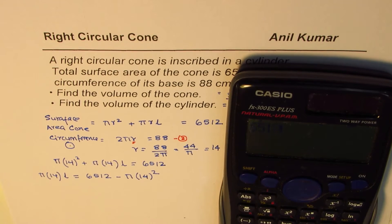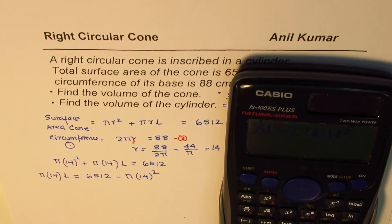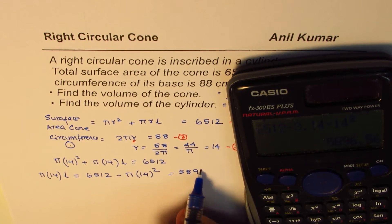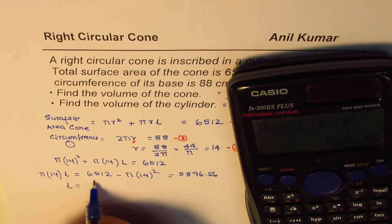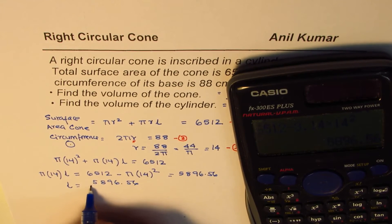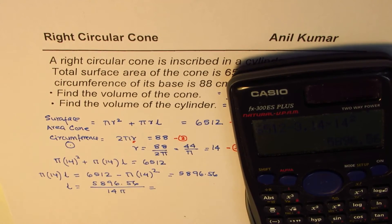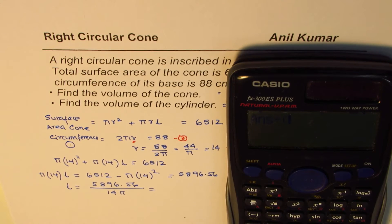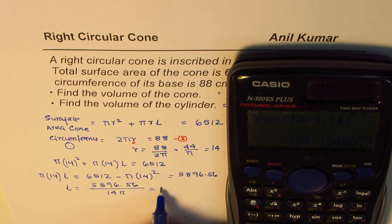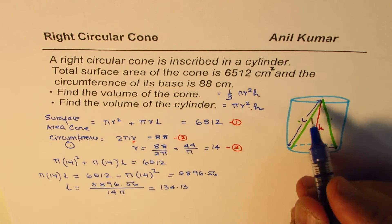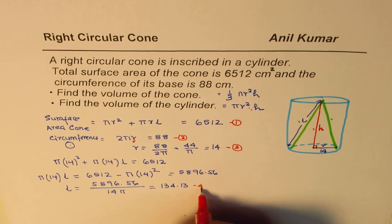Using π ≈ 3.14: 6512 − 3.14 × 14² = 6512 − 615.44 ≈ 5896.56. Then l = 5896.56 ÷ (14 × 3.14) = 5896.56 ÷ 43.96 ≈ 134.13. So the slant height l ≈ 134.13 centimeters. Let's call this equation 4.